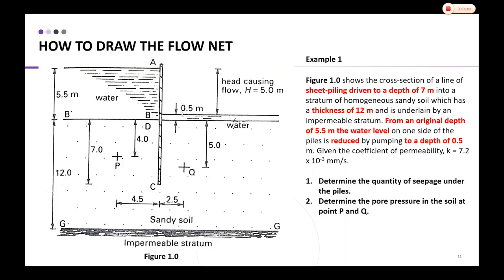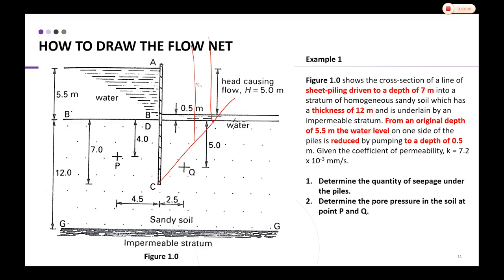We go straight to an example of how to draw the flow net. This example is based on the question where Figure 1 shows the cross-section of a line of sheet pile — this is the front view or side view of the cross-section. So we have a line of sheet pile at the back, and this is the cross-section we want to focus on.